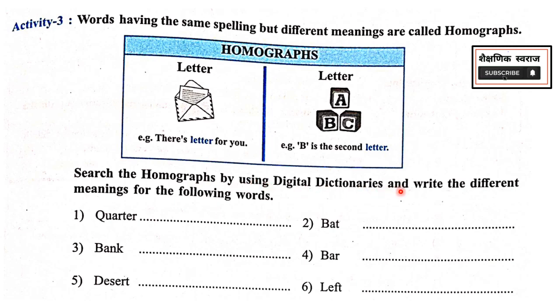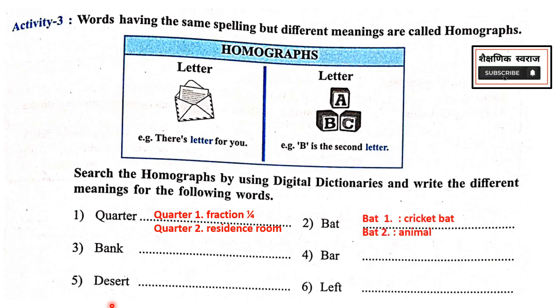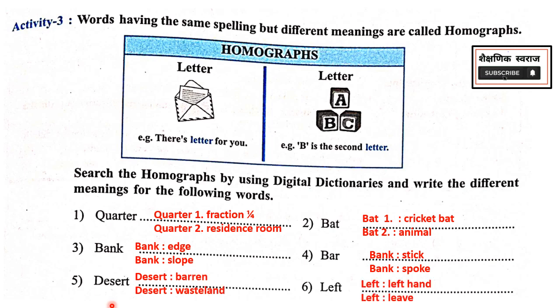Observe the homographs by using a Digital Dictionary and write the different meanings for the following words. Quarter means fraction one fourth, and Quarter means a residence or room. Bat — cricket bat, and second meaning is the animal. Bank — edge or slope. Bar — stick or rod. Desert — barren or wasteland. Left — left hand, and the second meaning of left is 'left behind' or 'went away'.